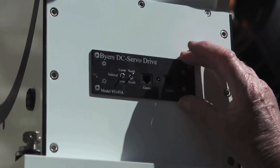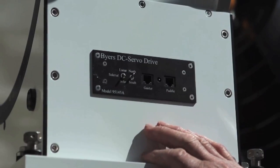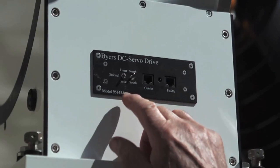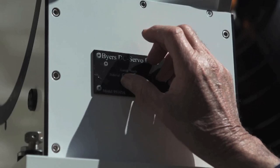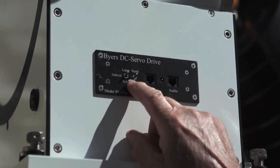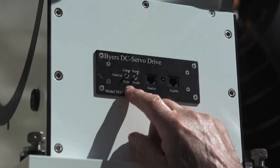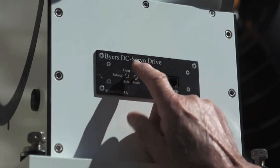This little panel here is the control panel and operates the whole instrument and you have these toggle switches here, which you can go into lunar for the moon, solar for the sun, sidereal for the stars.